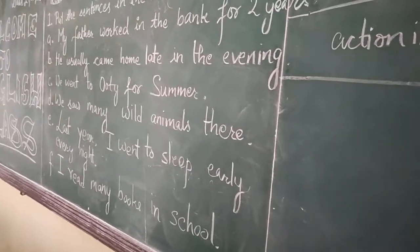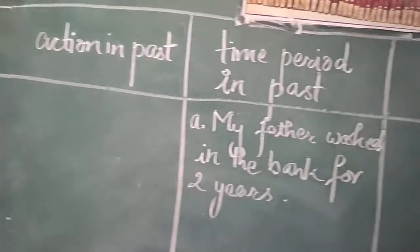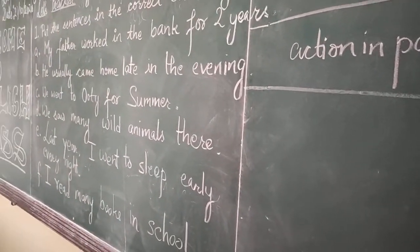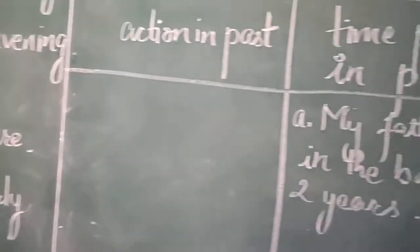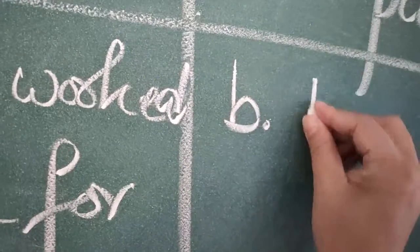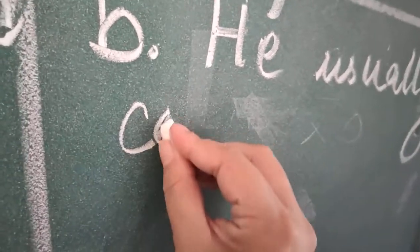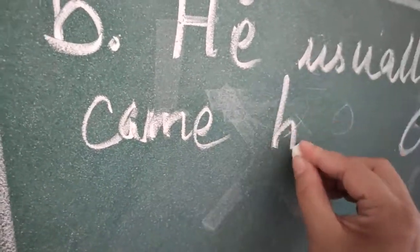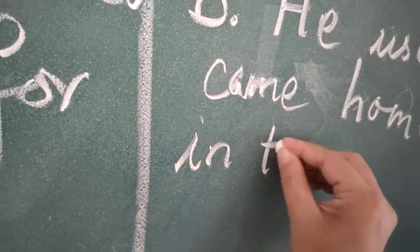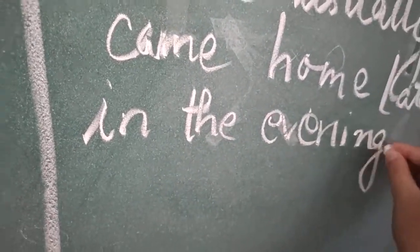Sentence B: 'He usually came home late in the evening.' This is indicating habit in the past — he used to come home late in the evening. So we will put sentence B in the 'Habit in past' column: He usually came home late in the evening.